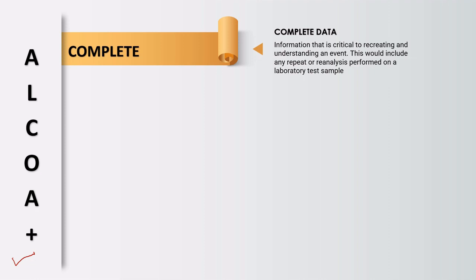The first ALCOA Plus principle is Completeness — all recorded data should be complete in a manner that shows any changes made to that data in terms of source as well as any change in time. Nothing must be deleted or lost without concern, and there should be an audit trail. This would include any repeat analysis or re-analysis performed in lab tests as well.